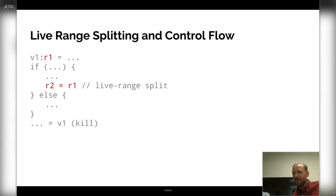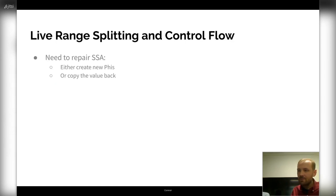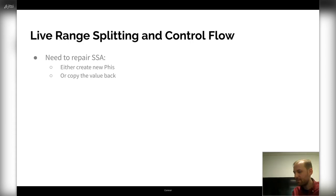How does live range splitting interact with control flow? For example, if we have a value V1 defined before an if and used after, and we split its live range in the then branch, then after the then and else branches it's in two different registers — so we have a problem. Without live range splitting, each definition gets exactly one register. But once we introduce live range splitting, this assumption doesn't hold. So when the control flow merges, those two register allocations have to be merged again by inserting new phi nodes, which can either be actual SSA values or contain just physical registers.